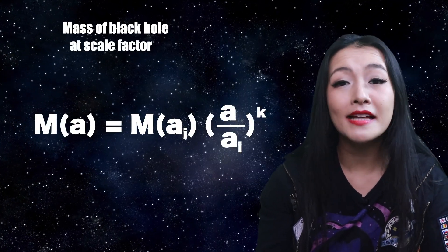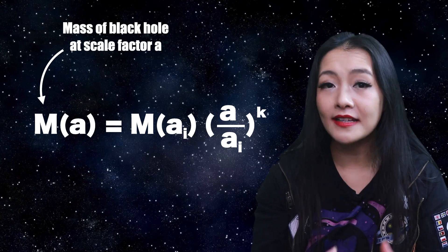So to do so, we need to compare the mass of a black hole at different times in history. Using this equation, here, M(a) is the mass of the black hole at scale factor a.